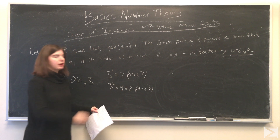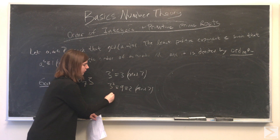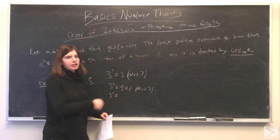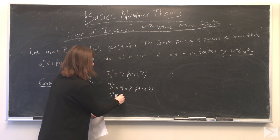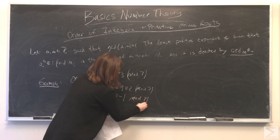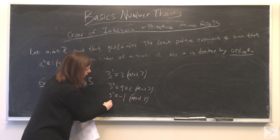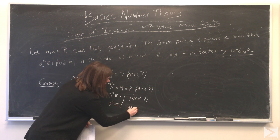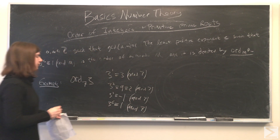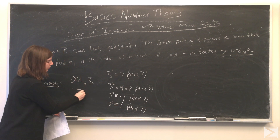We have to keep going until we're congruent to 1, so we go on to 3 to the third. That's 27, and 28 is a multiple of 7, so that's congruent to negative 1. It's clear that if we square both sides, we'll have 1 on this side, so 3 to the sixth is congruent to 1. That's our least positive exponent, so the order of 3 modulo 7 is equal to 6.